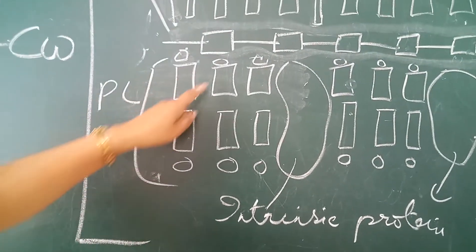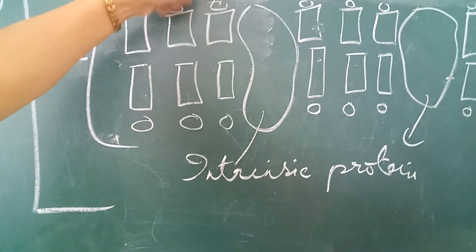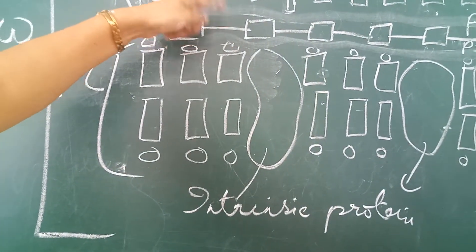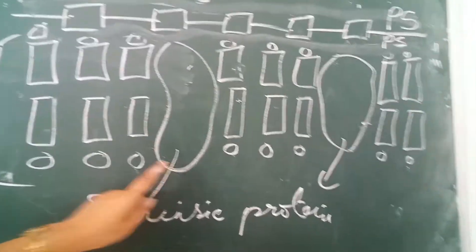Phospholipid bilayer. Their tail facing towards each other. Their head facing towards the periplasmic space. And these are the intrinsic protein.